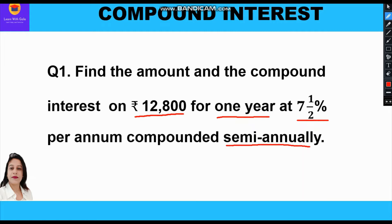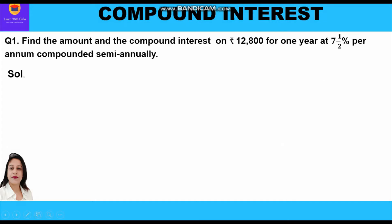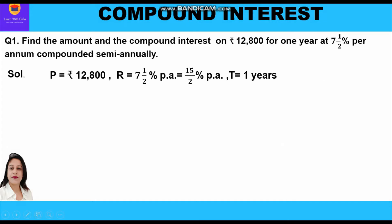Let us write what is given: Principal P = ₹12,800; rate = 7½% per annum = 15/2% per annum; time period n = 1 year. We shall apply the half-yearly amount formula: A = P(1 + r/200)^(2n).